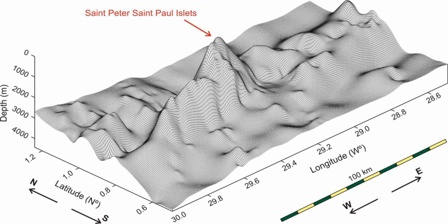Each detachment fault has three notable features: a breakaway zone where the fault began, an exposed fault surface that rides over the dome and a termination, which is usually marked by a valley and adjacent ridge.